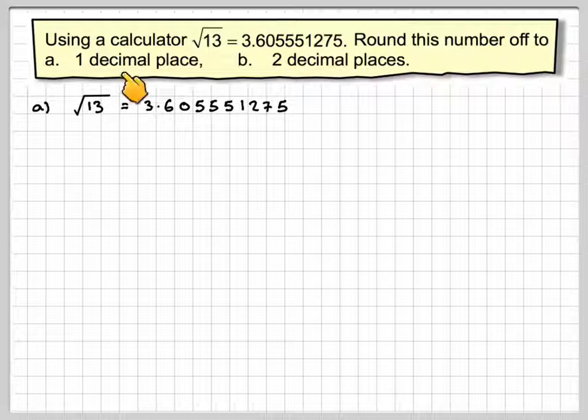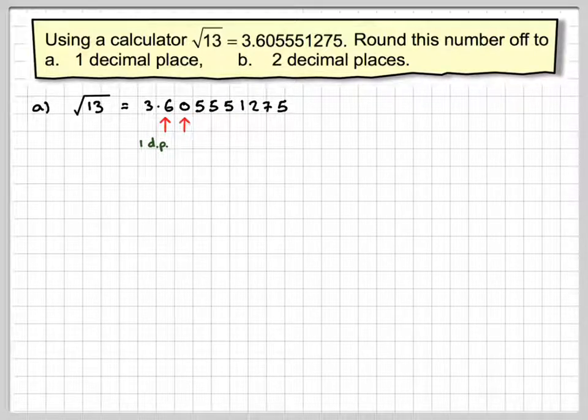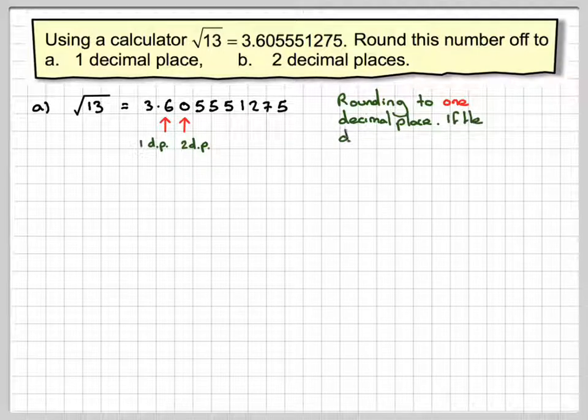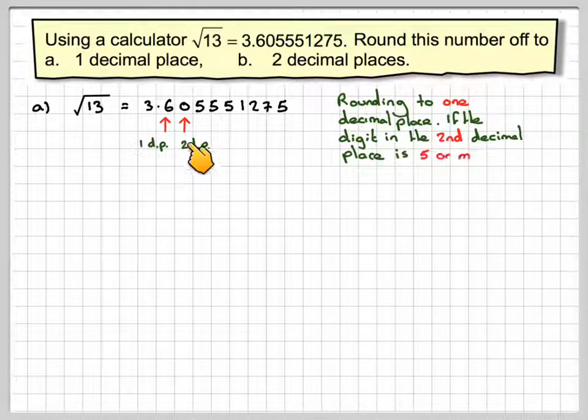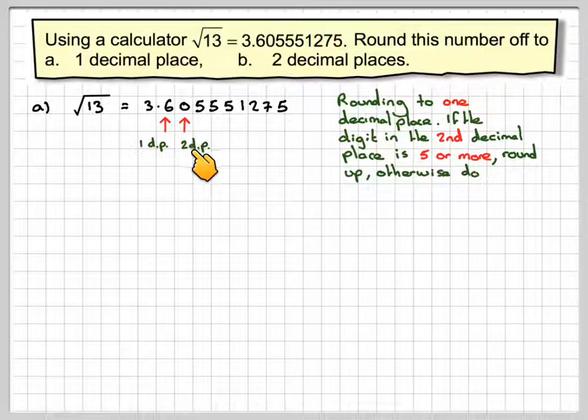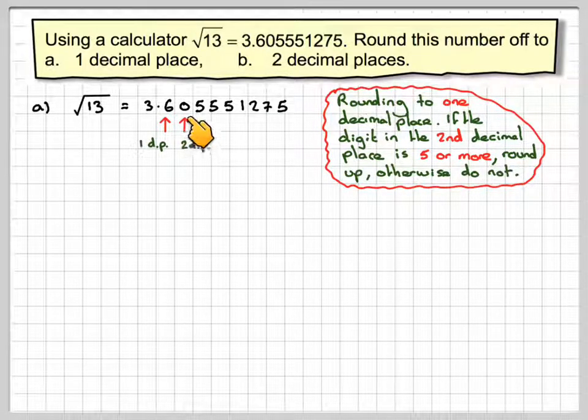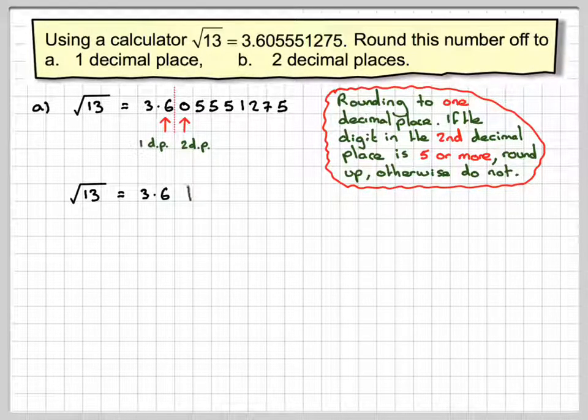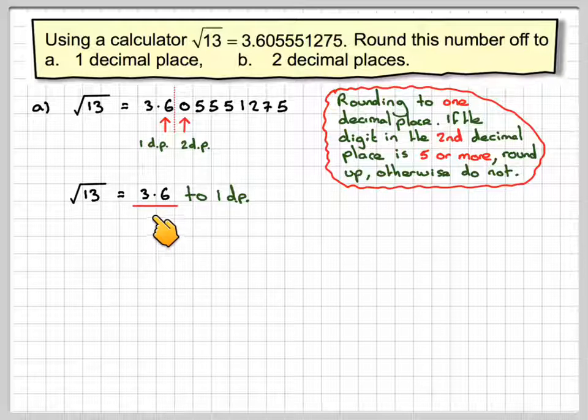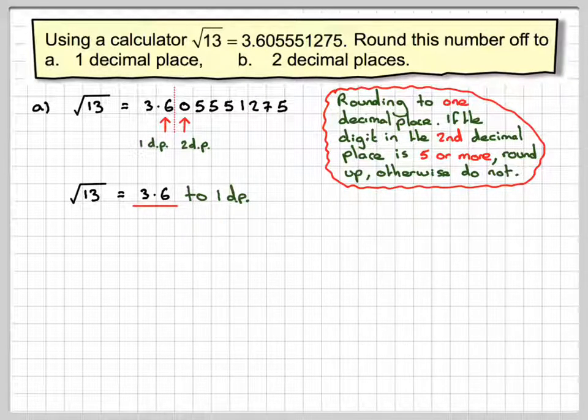Now in the first case we want to round off to one decimal place. So the 6 here is the first decimal place, and the 0 is the second decimal place. Now rounding to one decimal place, if the digit in the second decimal place is 5 or more, we round up, otherwise we do not. So this is a 0, so it has no effect on the 6. So we can say that the square root of 13 is equal to 3.6 to one decimal place.